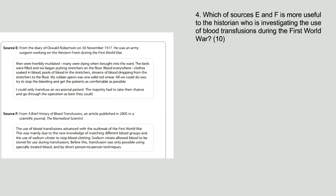So question four will always be which of sources E and F is more useful to the historian who is investigating whatever they're investigating. The key word in this question is useful. You are a historian investigating something—which one would you use to write your great book about this thing?